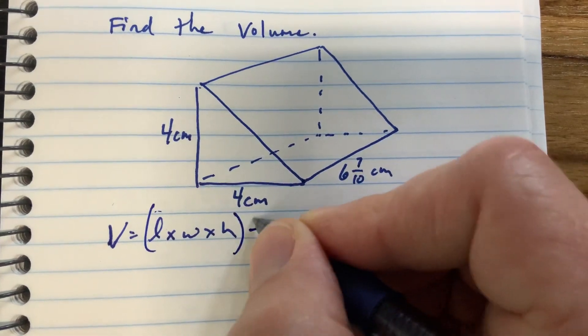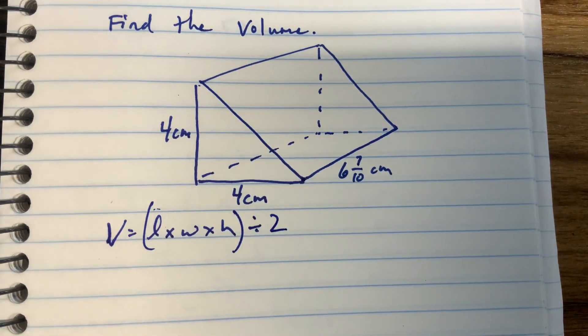So remember, whenever you have a triangle, you have to divide that information by two because a triangle is half of a rectangle.